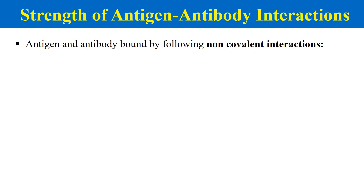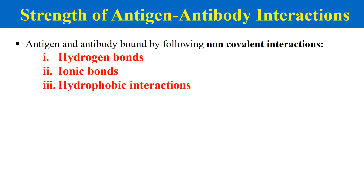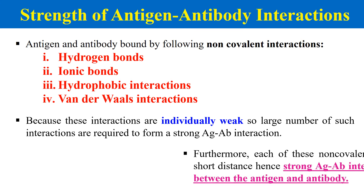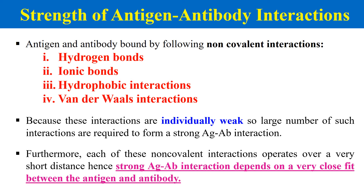These antigen-antibody interactions are non-covalent, involving hydrogen bonds, ionic bonds, hydrophobic interactions, and van der Waals interactions. These four are the main types of bonds formed between antigen and antibody, and because they are non-covalent they are individually weak. In order to make the interaction strong, the antigen and antibody must be in very close fit with each other, since these forces are weak in nature.